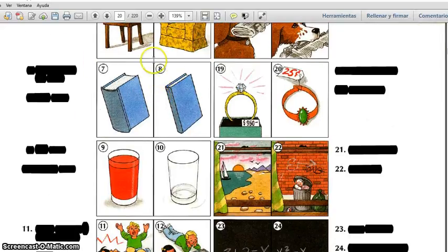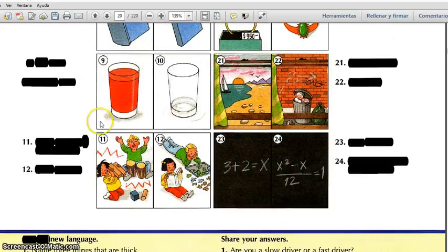Number seven: thick book or fat book. Number eight: thin book. Number nine: full glass. Number ten: empty glass. Number eleven: noisy children, loud children. Number twelve: quiet children.